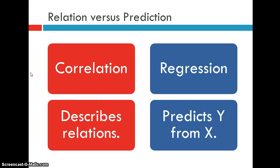However, with regression, you do. So the dependent variable is y. It's the variable that you're predicting. And the independent variable is x, your predictor variable.